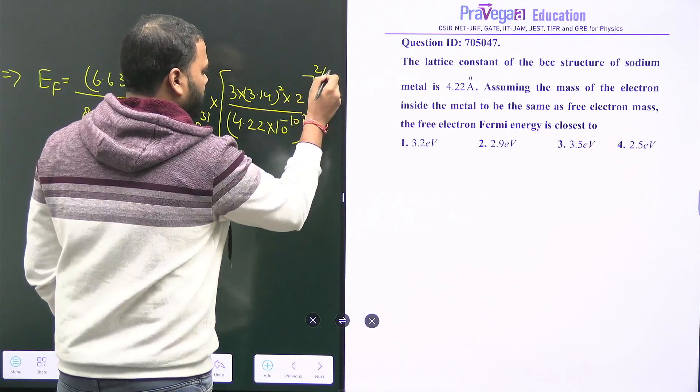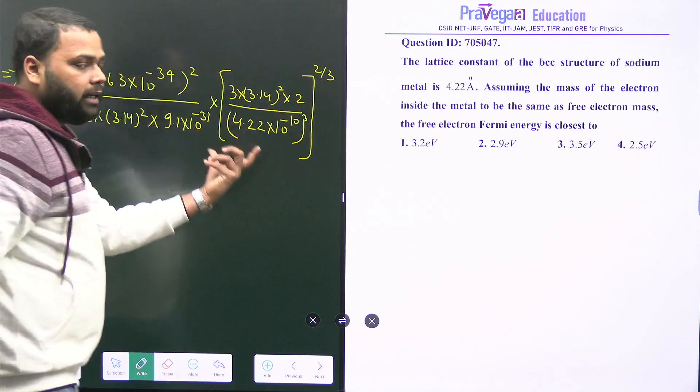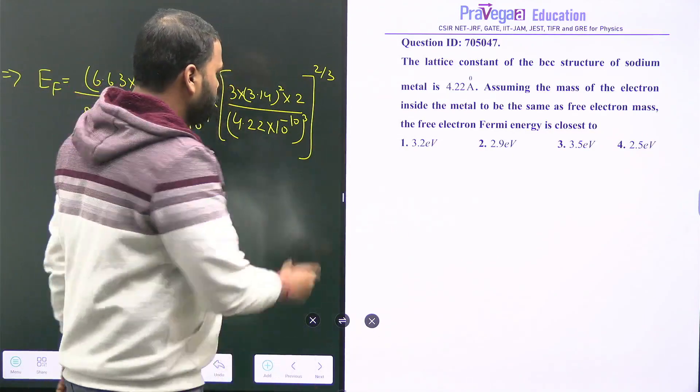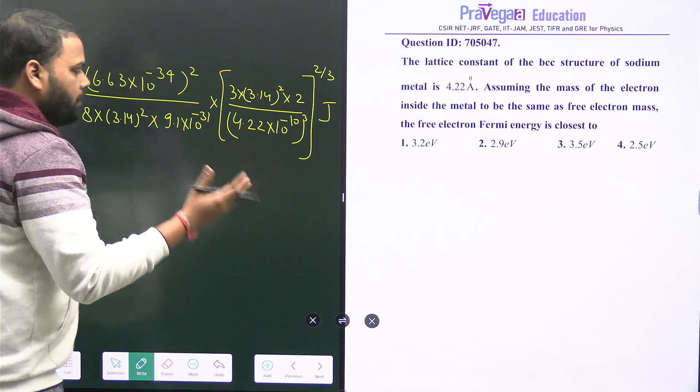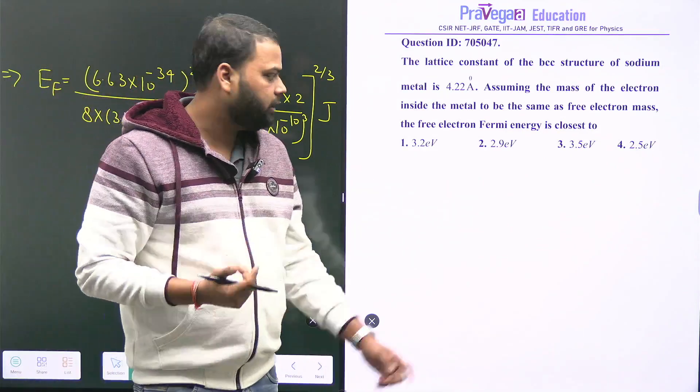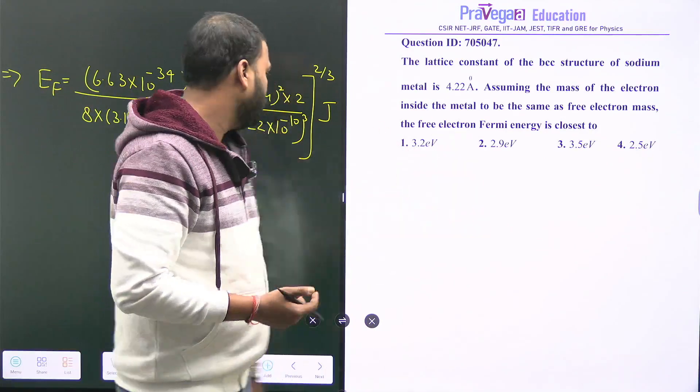This power is 2/3, and this value will be in joules, so just divide it by 1.6 times 10 to the power minus 19 to convert into electron volts, because the answer is in electron volts.